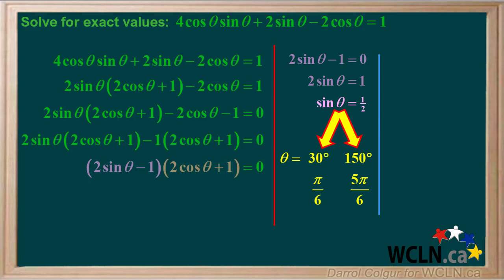Two angles that have a sine of positive 1 half are 30 degrees, which is pi over 6 radians, and 150 degrees, which is 5 pi over 6 radians.